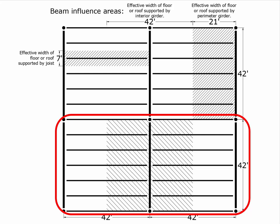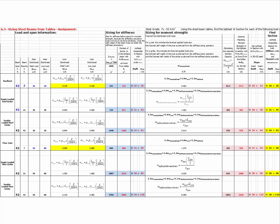In order to size all the typical members in this system, we only need to construct this much of the structure in multi-frame, because it contains a perimeter primary member, interior primary member, and secondary members. This spreadsheet shows the beam sizing processes based on tables. The beam loads for the secondary beams are highlighted, and the only loads we put on the structure in multi-frame are on the secondary members, because multi-frame already accounts for the transfer of loads from secondary members to primary members.